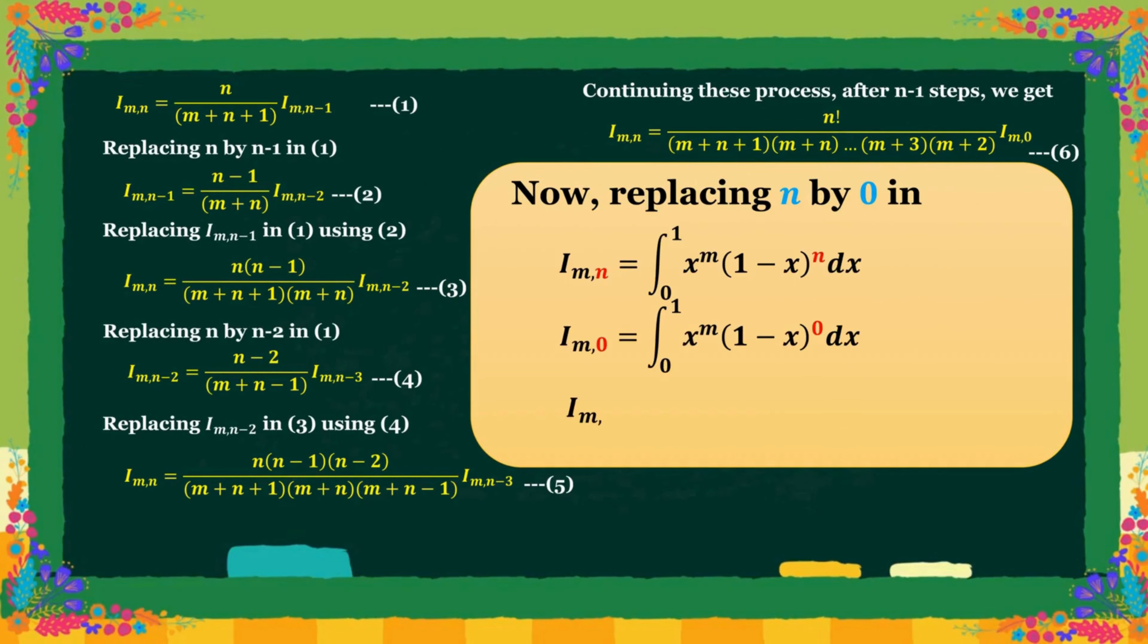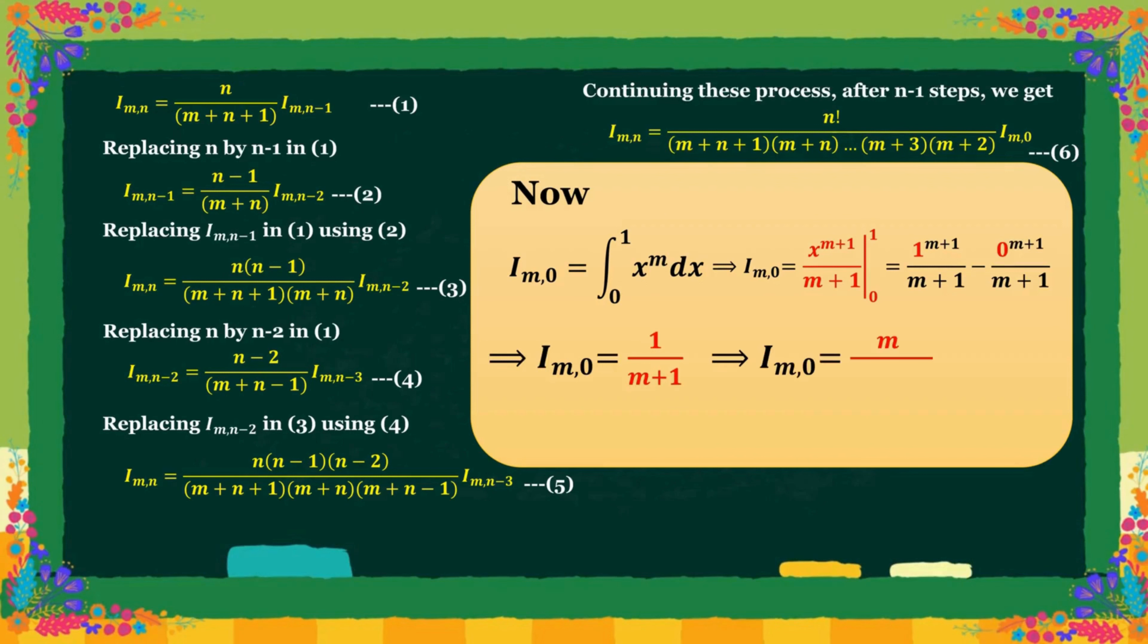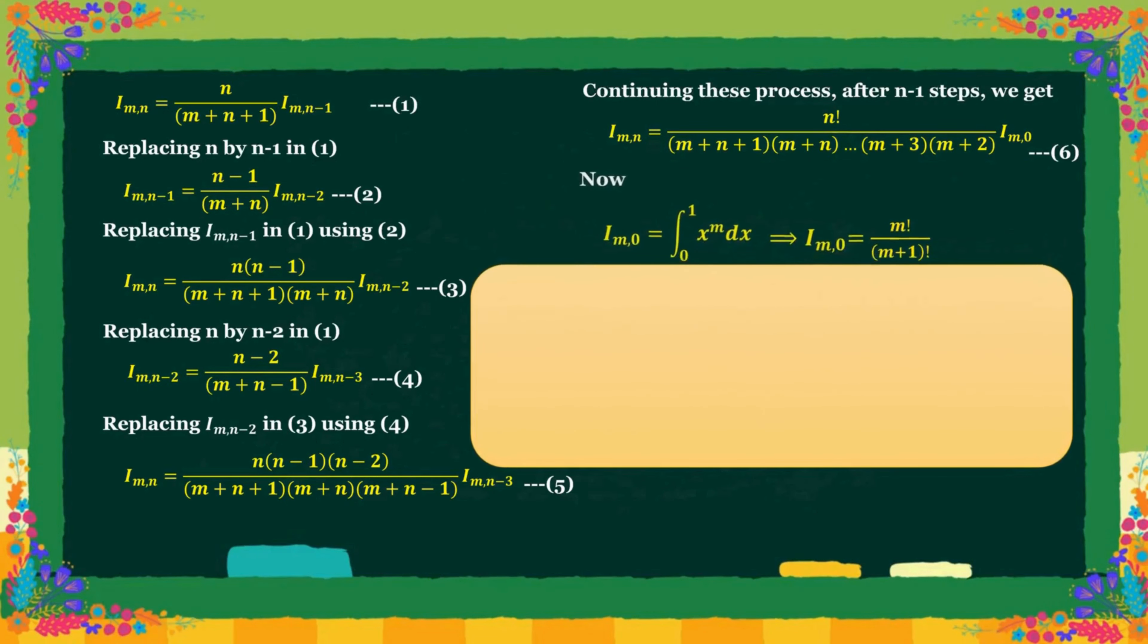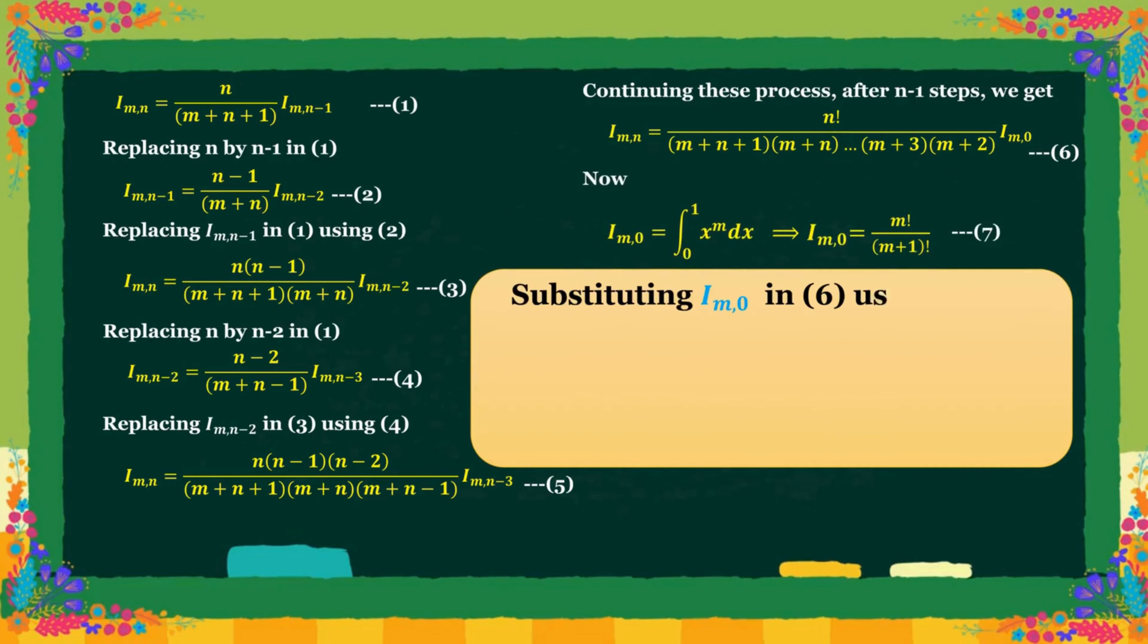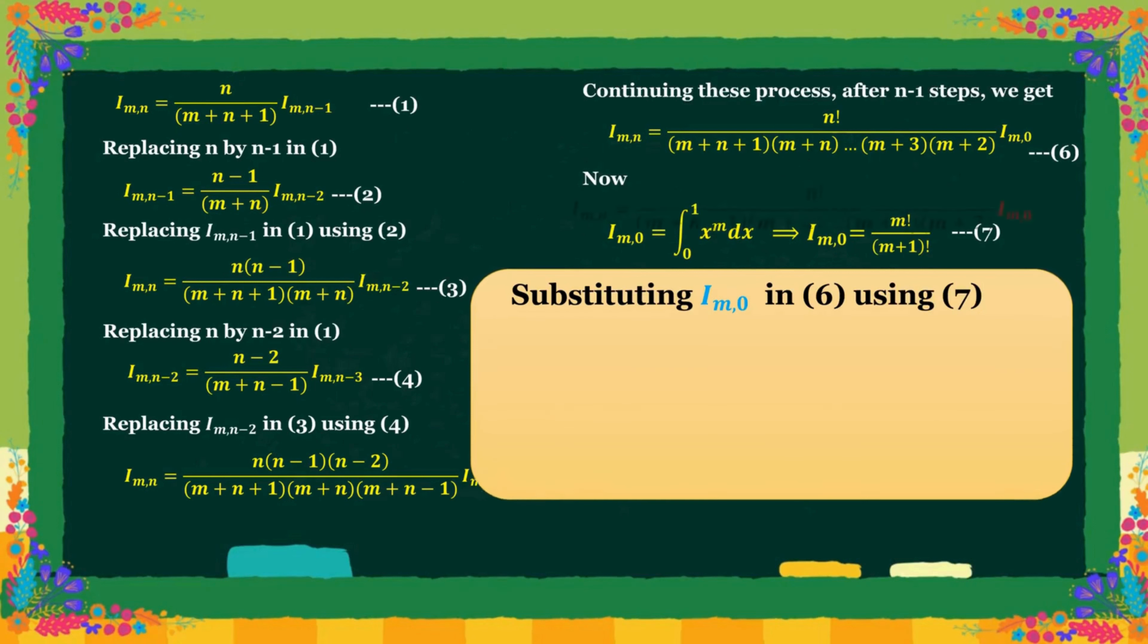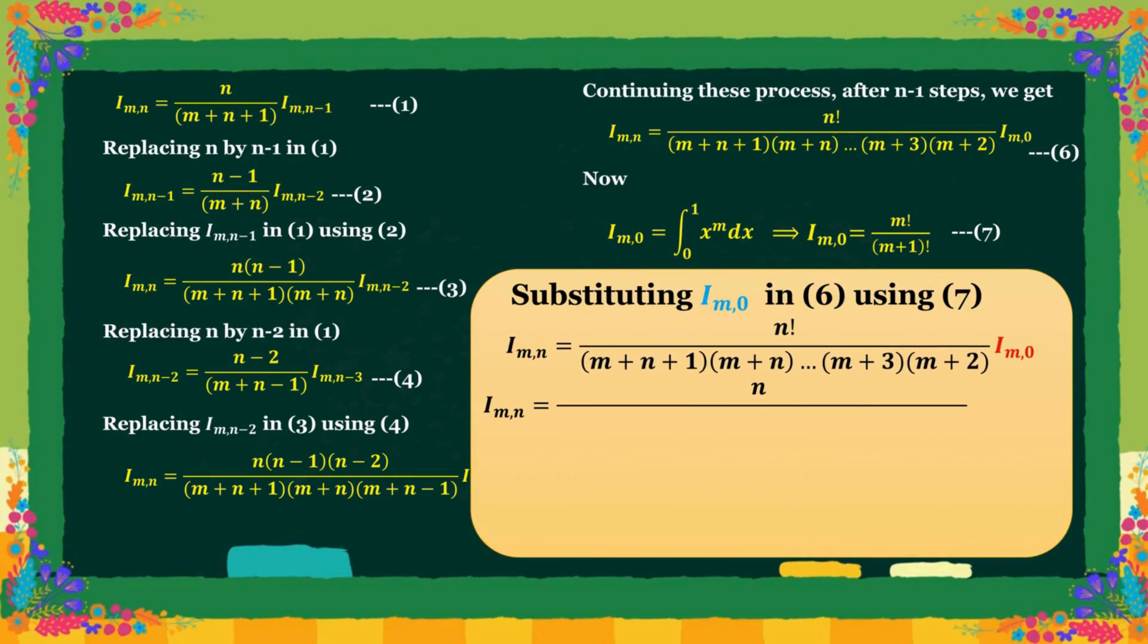Now we have to find the value of I m 0. The final value of I m 0 is factorial n over factorial m plus 1. Substituting I m 0 in equation 6 using equation 7, we get the required value.